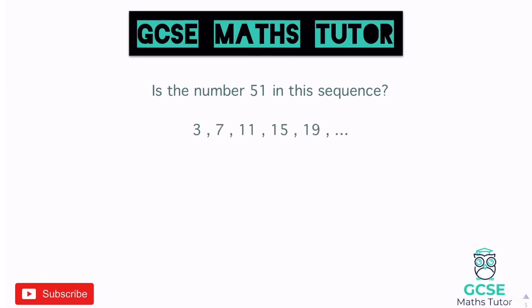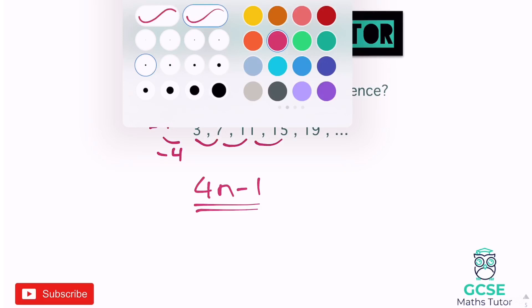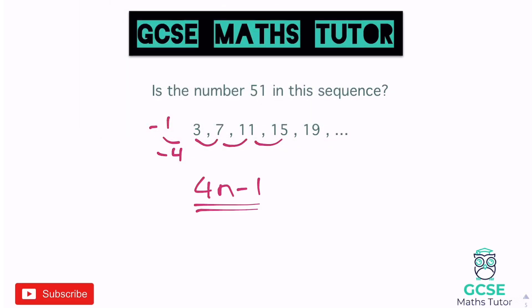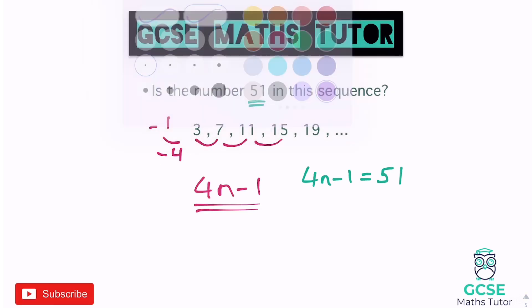Now something slightly different: is the number 51 in this sequence? We could keep writing terms to see if 51 appears, but we can use the nth term instead. The sequence goes up in fours, so the nth term is 4n minus 1. Rather than trialling values, we can ask: is there a number I can substitute in that gives 51? So we write the equation: does 4n minus 1 equal 51?